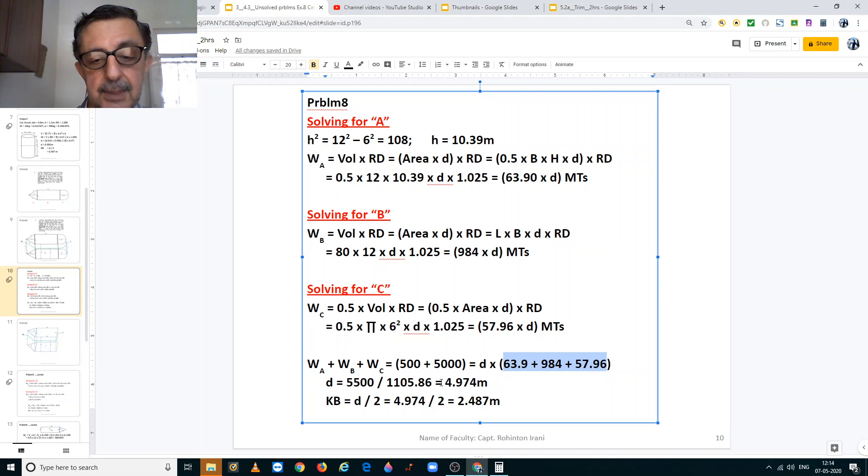Now KB is equal to half the draft, that is 4.974 divided by 2, giving us the height of the center of buoyancy about the keel to be 2.487 meters.